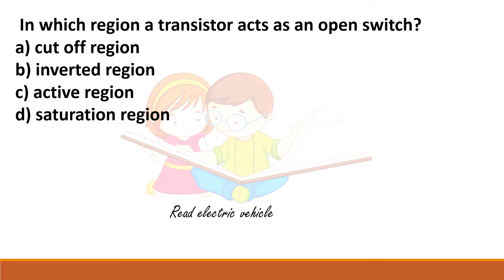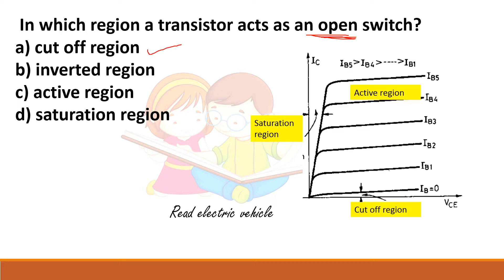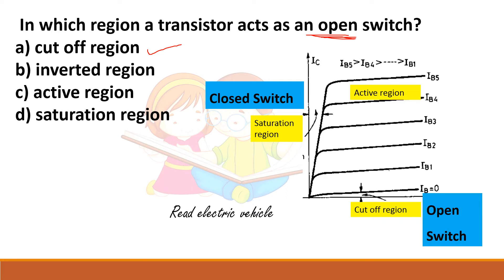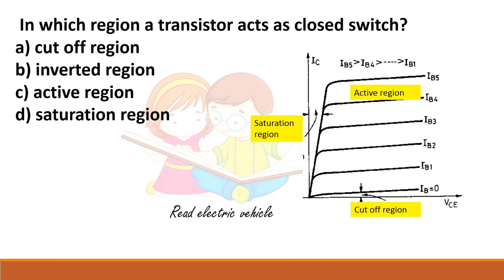In which region does a transistor act as an open switch? A transistor has three regions: cutoff, active, and saturation. Acting as an open switch means the device is not conducting — no current flows. So the answer is the cutoff region, which is the open switch state.